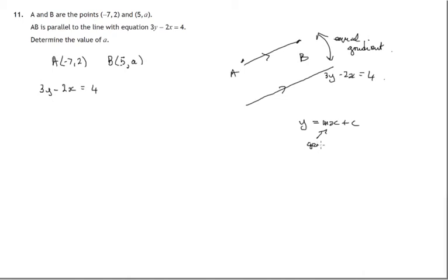We know that the coefficient of x, that m value, will be the gradient of the line. So we have to get y on its own. Let's add 2x to both sides and divide both sides by 3.